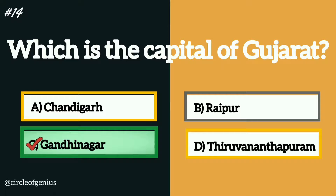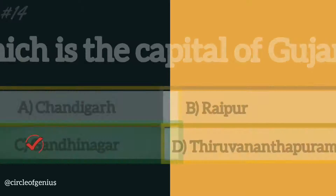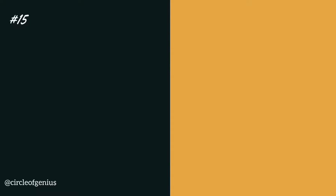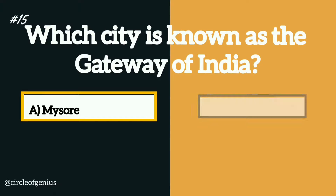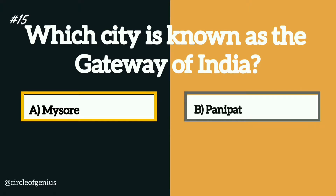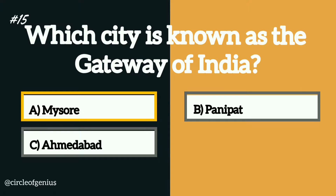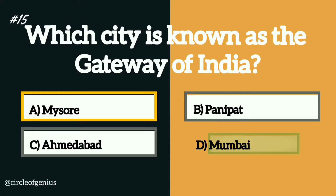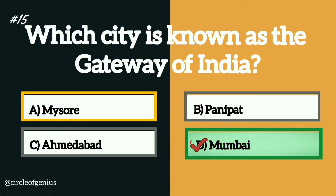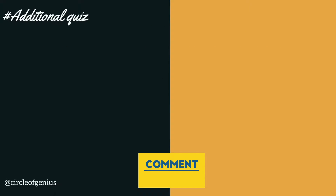The correct answer is option C, Gandhinagar. Question number fifteen: which city is known as the Gateway of India? Option A: Mysore, B: Panipat, C: Ahmedabad, D: Mumbai. The correct answer is option D, Mumbai.